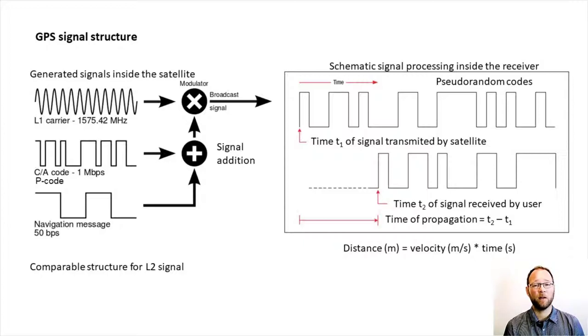The receiver instruments know this pseudorandom code and generate their own. By comparing the receiver code to the satellite code by a process called signal correlation, the time difference and hence distance to the satellite can be determined.